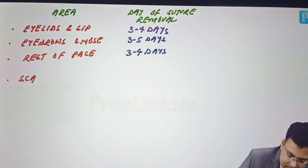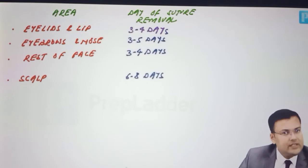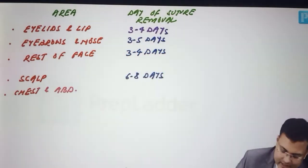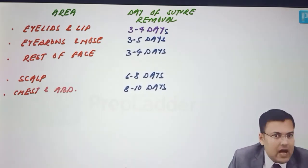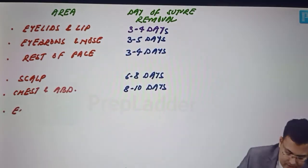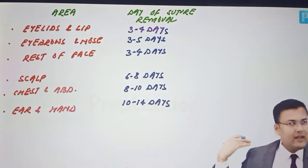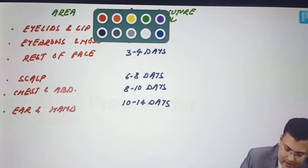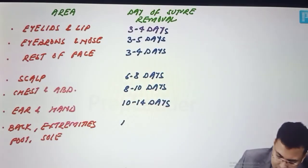In scalp, sutures are removed on the sixth to eighth day. In chest and abdomen, sutures are removed on eight to ten days. In ear and hand, sutures are removed in ten to fourteen days. For back, extremities, foot and sole, sutures are removed in twelve to fourteen days.